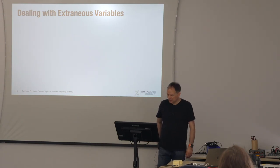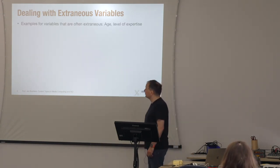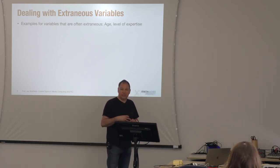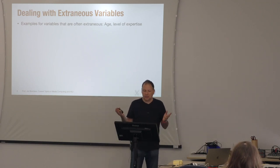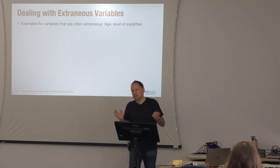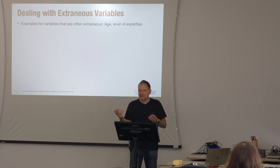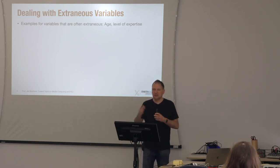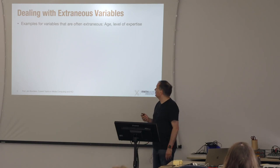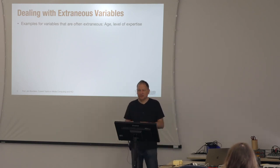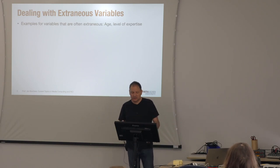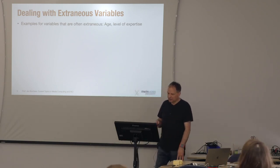Some examples of extraneous variables that can become confounding are things like age of users — it turns out age is actually less important than you might think, since personal differences tend to overshadow age effects. Level of expertise is another one. If you're just asking people to click a target on a screen, expertise level might not matter much, but in other situations it could very well become a confounding variable.